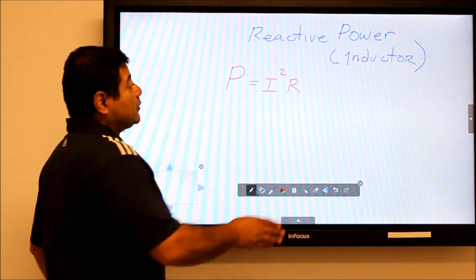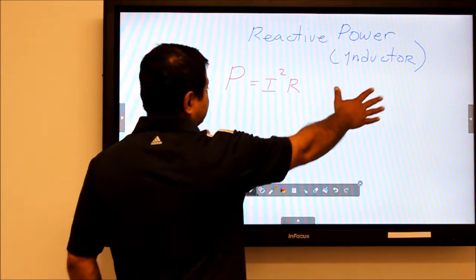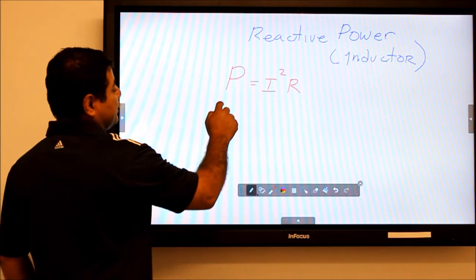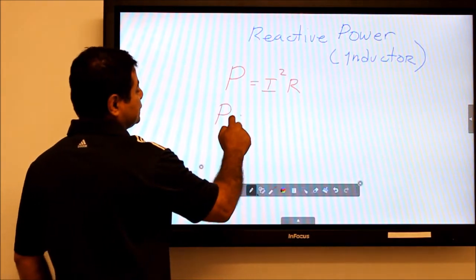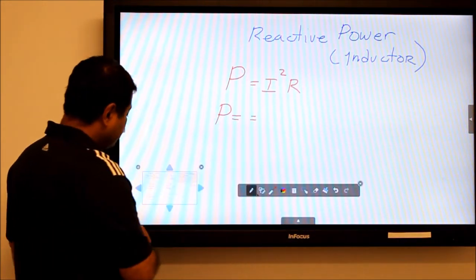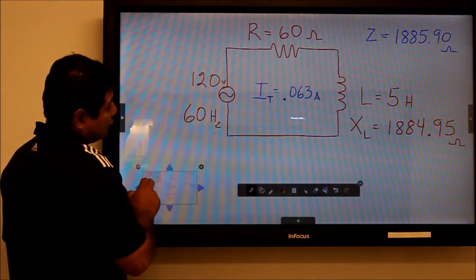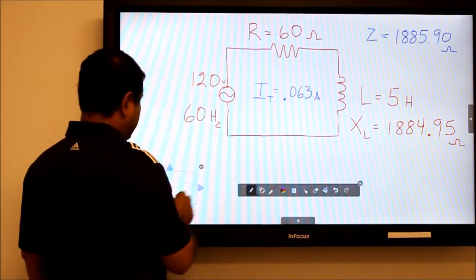Now that I know the reactive power comes from the inductor, I use my power formula again and substitute the values. We go back to our current. I'm going to square the current to get our current value, which is 0.063 amps.